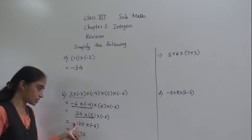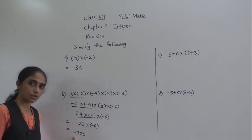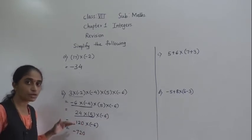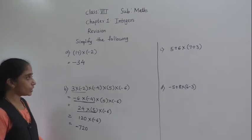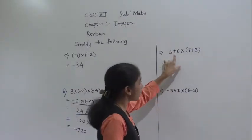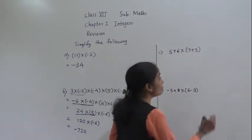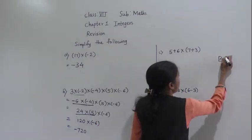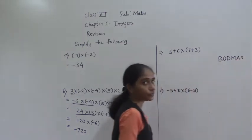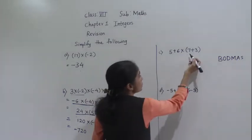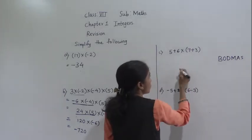The answer is minus 720 because this number is positive and this number is negative, so their product will be negative. In multiplication, if one number is positive and another number is negative, then their product will be negative. Now in this example, addition is given, multiplication is given, bracket is also given. So you know the rule BODMAS — we have learned this in fifth and sixth standard.